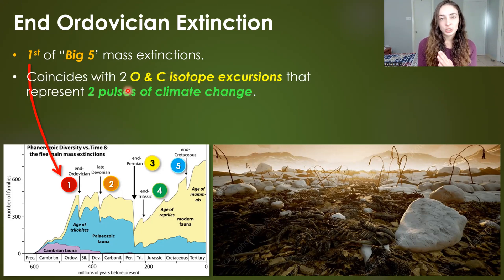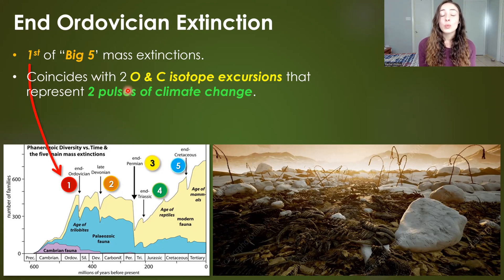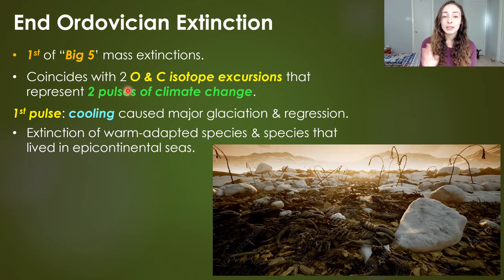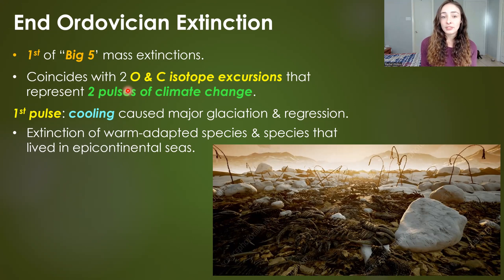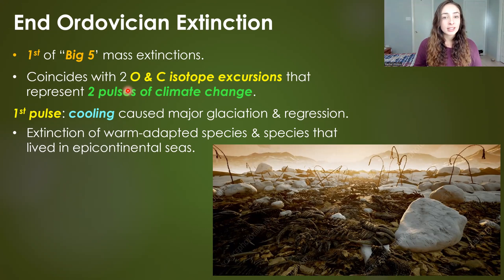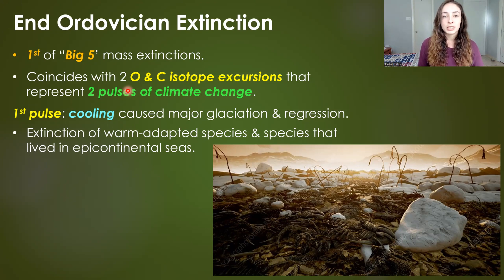This End Ordovician extinction event coincides with two major oxygen and carbon isotope excursions that represent two pulses of climate change that likely caused the extinctions. The first pulse was a cooling event that caused major glaciation and regression or sea level fall, which led to the extinction of warm-adapted species as well as species living in epicontinental or shallow continental seas. This regression caused just as many extinctions as the cooling and glaciation did.